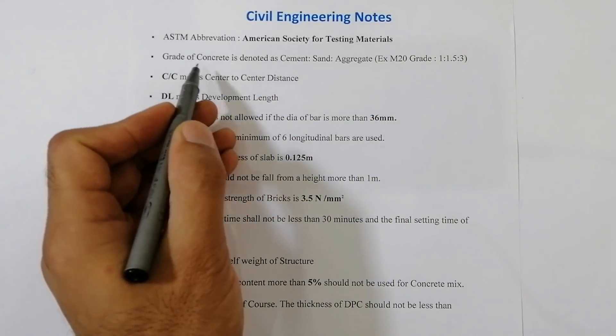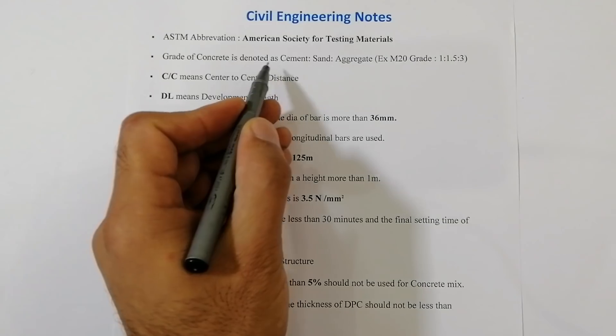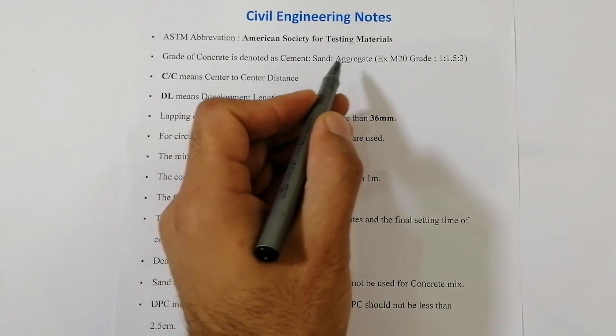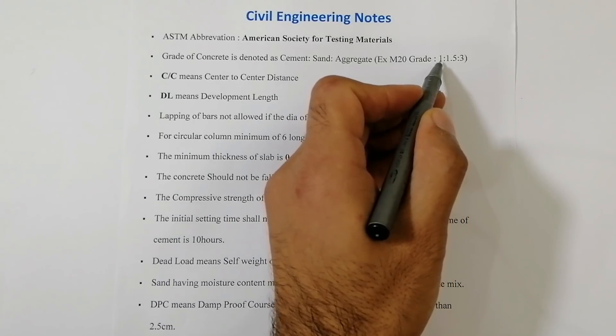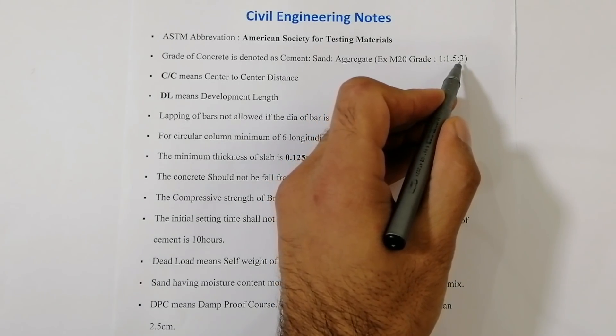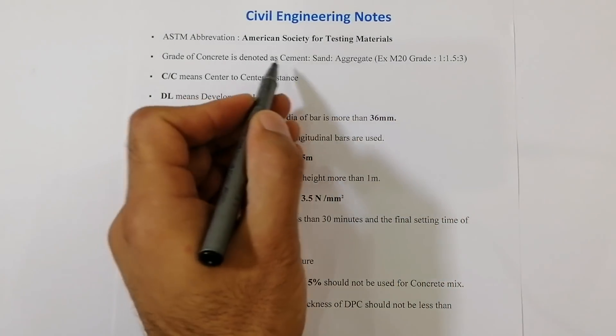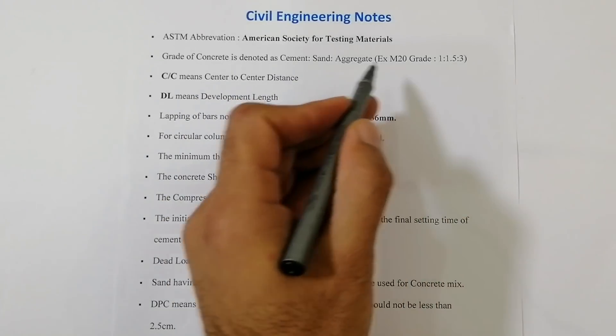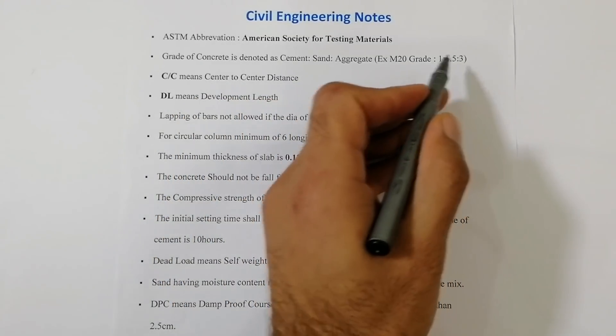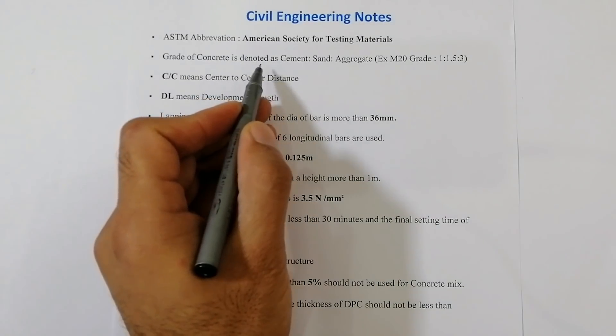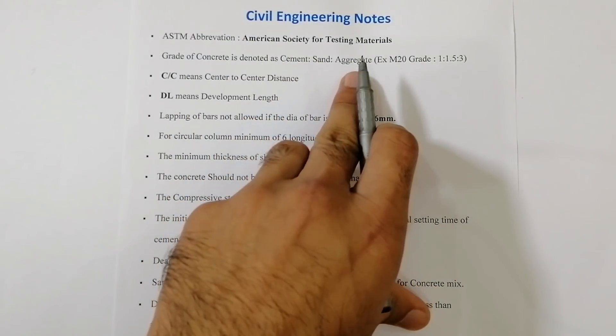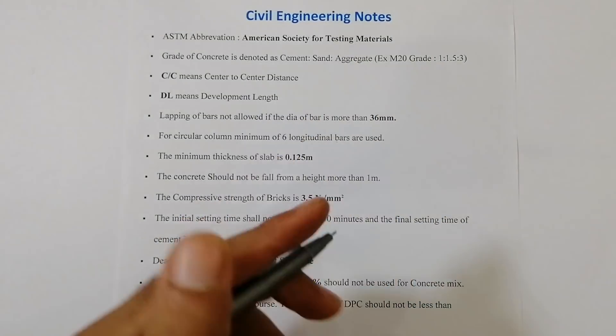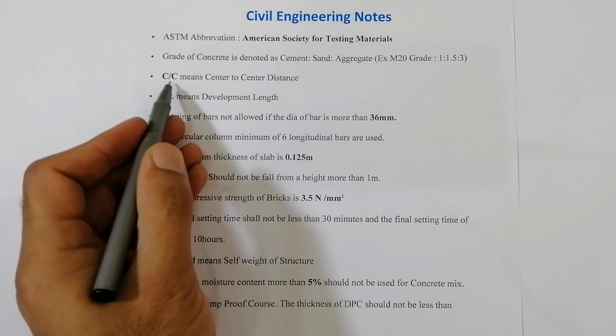The second one: grade of concrete is denoted as cement, sand, and aggregate, which ratio is 1:1.5:3. Here one is cement, 1.5 is sand, and 3 is aggregate or crush. Grade of concrete is denoted as cement, sand, and aggregate with crush in place of aggregate.